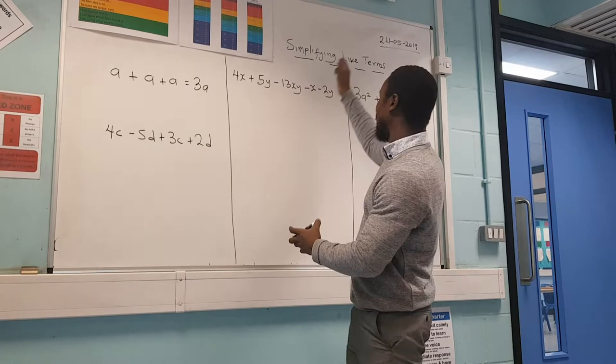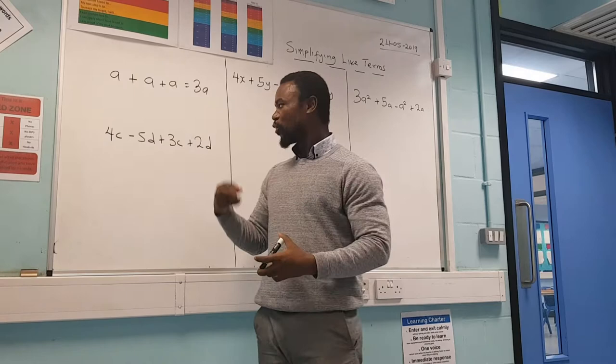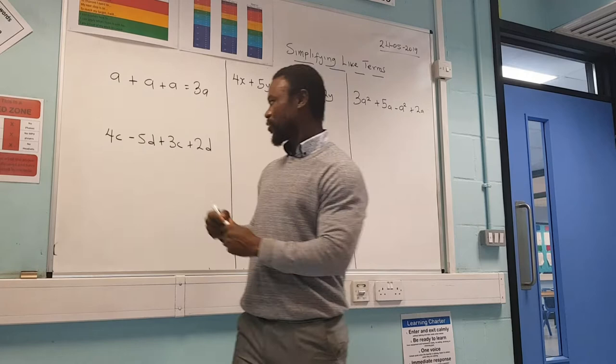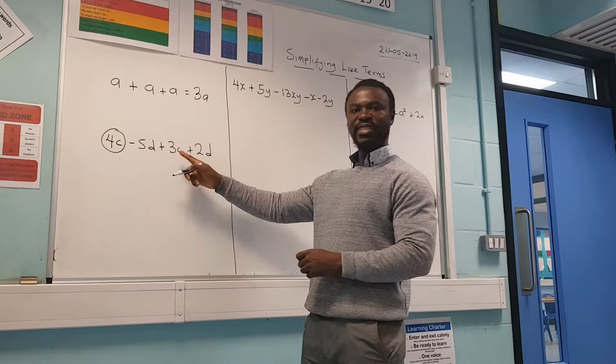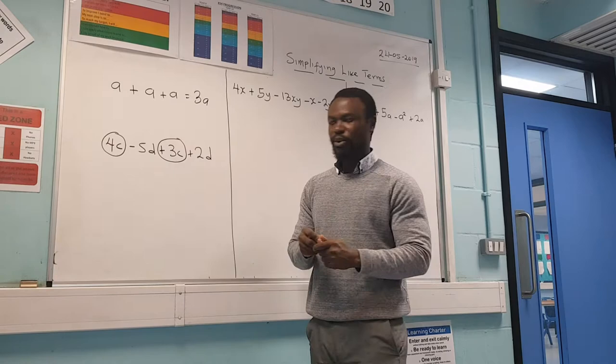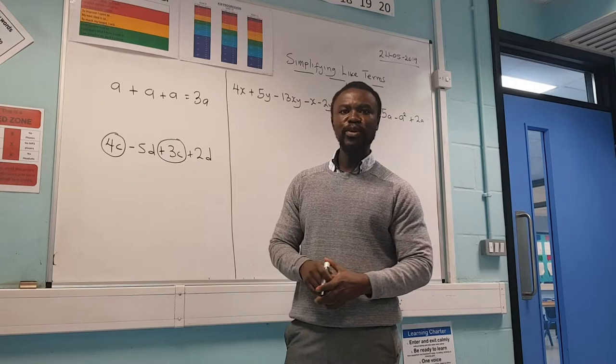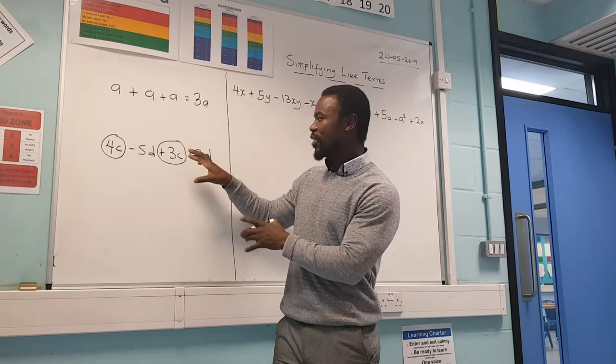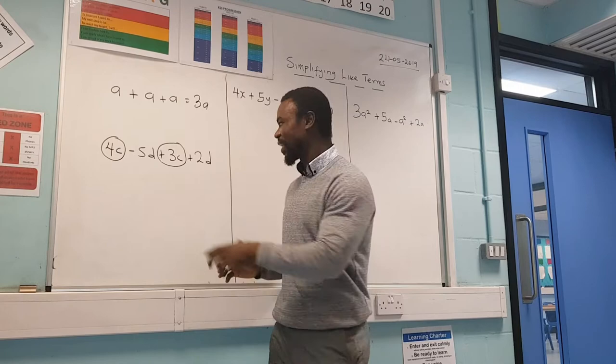To simplify, we must first locate all the letters that are the same. I'm going to put a circle around the letters that are C. I can see there is a C here and another C here, so I will circle them. Somebody might ask why I've circled the plus sign — the plus is very important. The plus is the sign in front of the number three, which is part of the C term.